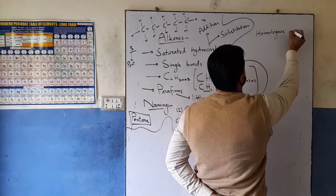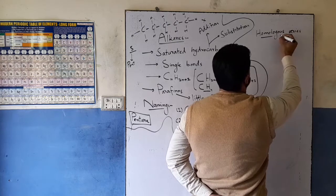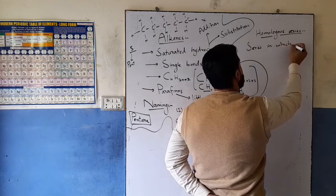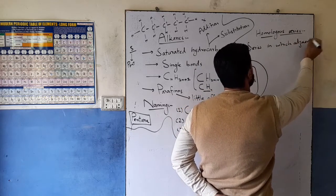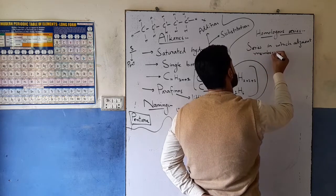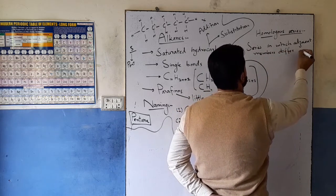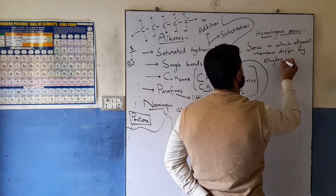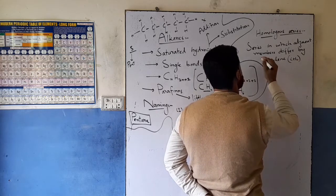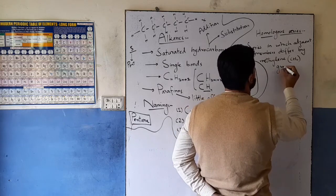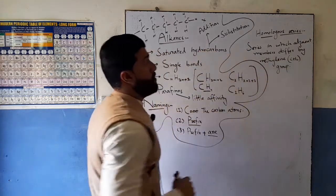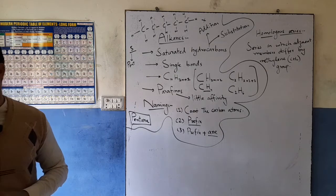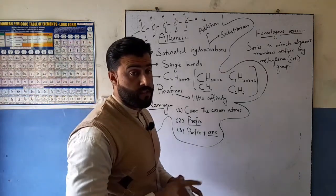This is the homologous series. This is the series in which adjacent members differ by CH2, the methylene group. In organic compounds, there is a variety of different organic compounds.